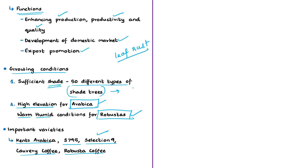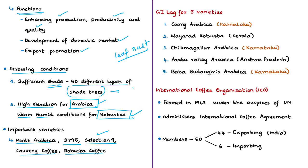Leaf rust is the most important disease of coffee worldwide, caused by a parasitic fungus. Recently, the Geographical Indication tag was awarded to five varieties of Indian coffee — an important fact for examinations. These are: Coorg Arabica coffee from Kodagu in Karnataka; Wayanad Robusta coffee from Wayanad in Kerala; Chikmagalur Arabica coffee from Chikmagalur in Karnataka; Araku Valley Arabica coffee from Andhra Pradesh and Odisha; and Baba Budangiri Arabica coffee from Karnataka.